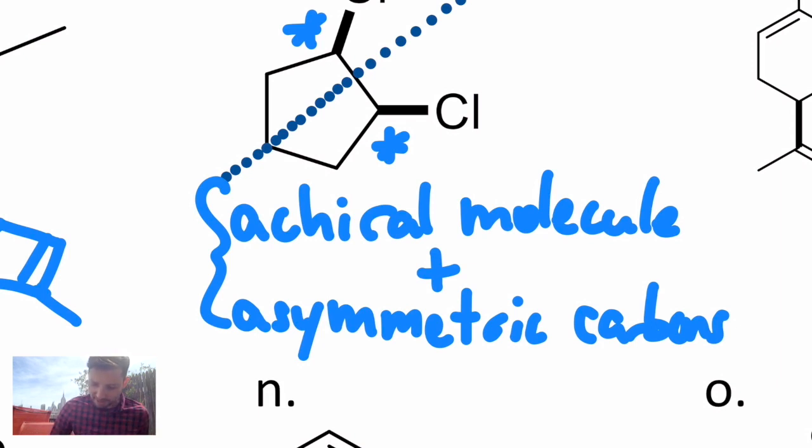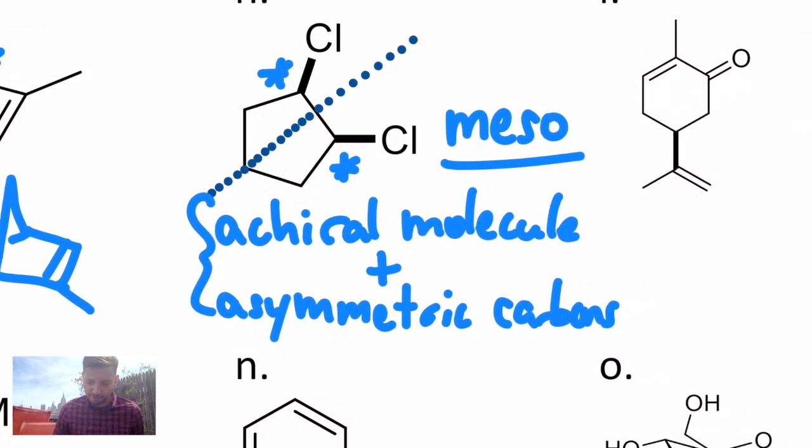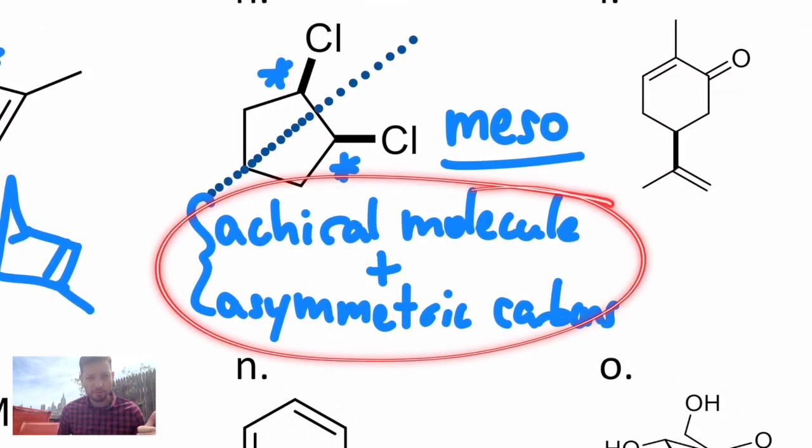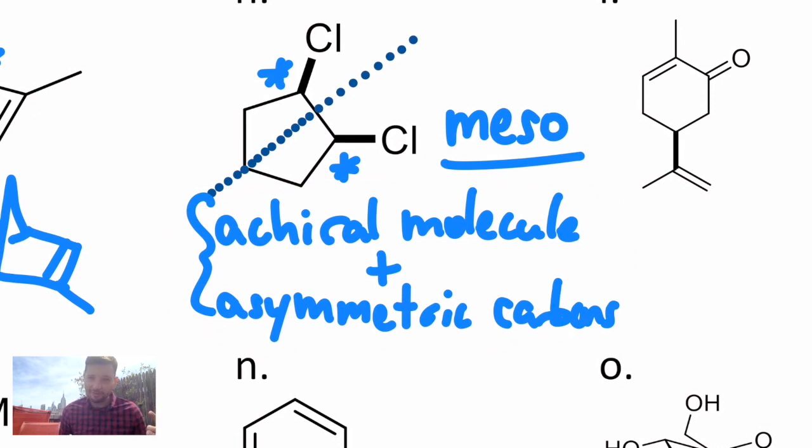We give this a special name. We call this a meso compound from the Greek for middle, probably referring to where you can draw a plane of symmetry down the middle of it. So a special class of compounds called meso compounds are where you have those two criteria. It contains asymmetric carbons, but it doesn't have an enantiomer. It's achiral overall. That means we're only going to see meso compounds when you have at least two centers of asymmetry, two asymmetric carbons in this case.